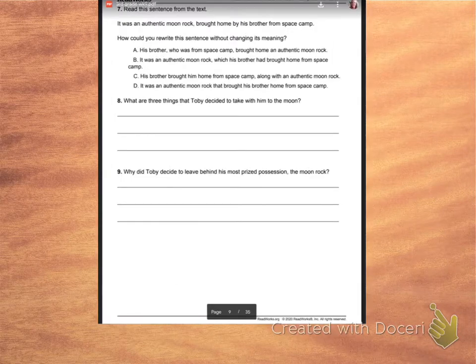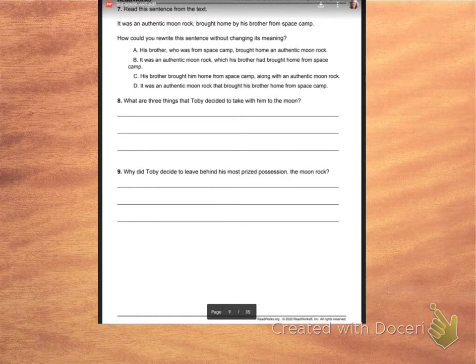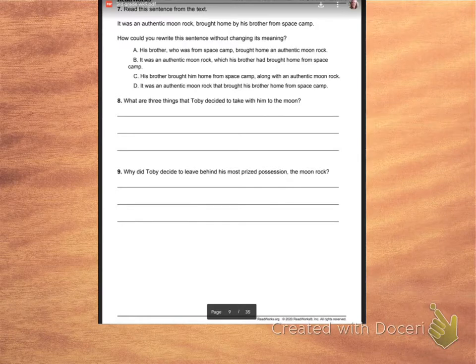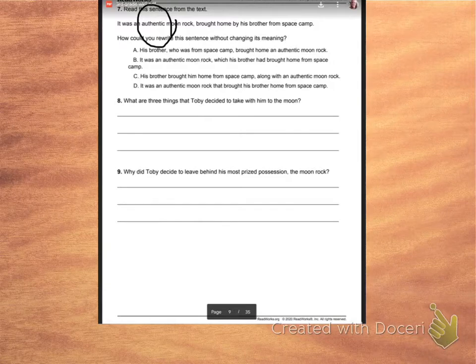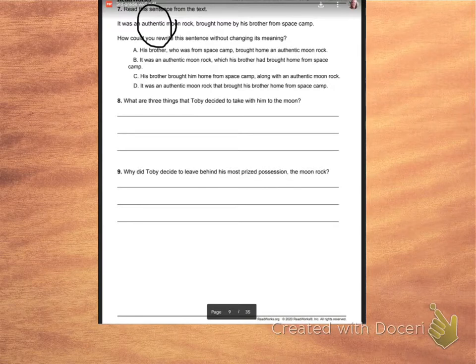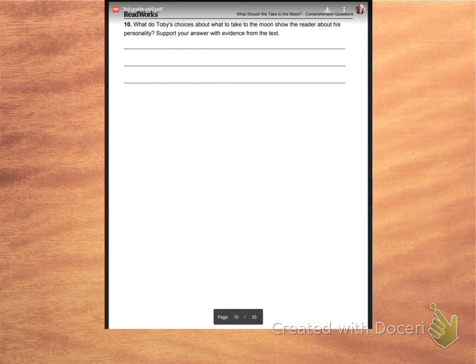So moving on, I notice it says to read the sentence from the text. It says it was an authentic moon rock brought home by his brother from space.